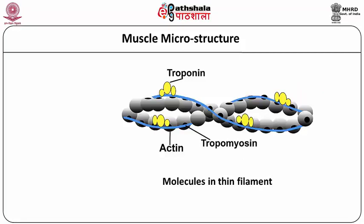The thin filament has three components as mentioned earlier: actin filaments, which are ball-like structures; tropomyosin, which is a tape-like or thread-like structure holding the actin filaments; and the troponin molecule. All three are twisted together and it looks like a necklace, creating the thin filament.